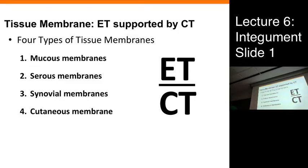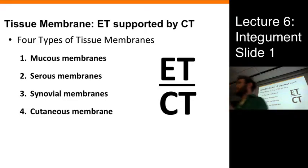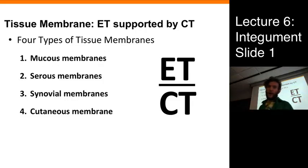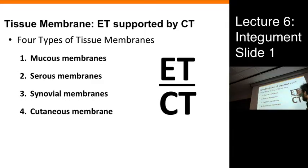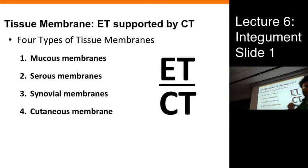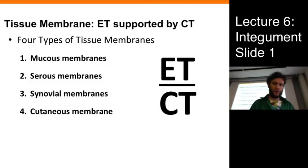This is the last of the connective tissue points. The notion of a tissue membrane — you'll remember back to the connective tissue slide outline. The key symbol to remember is ET over CT: a tissue membrane is simply a layer of epithelium on top of a layer of connective tissue. That's the structure of one of these tissue membranes.